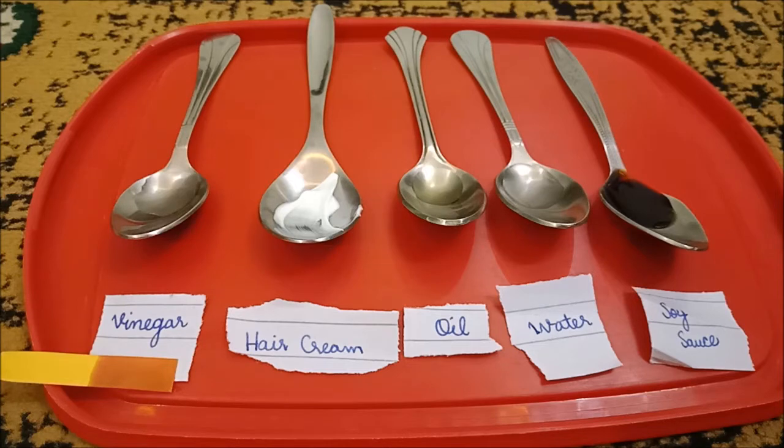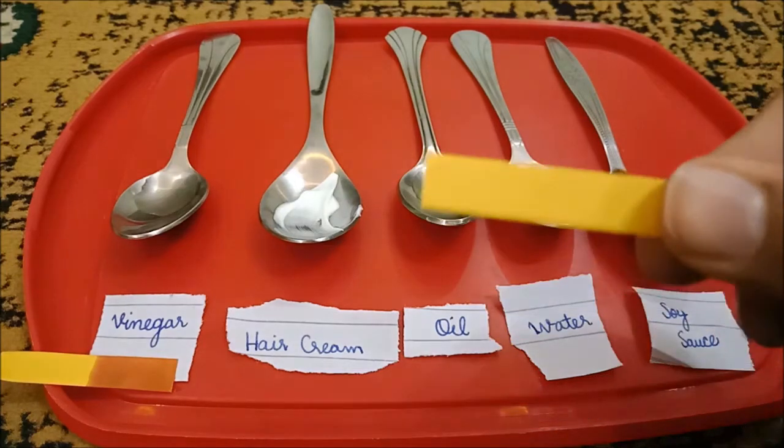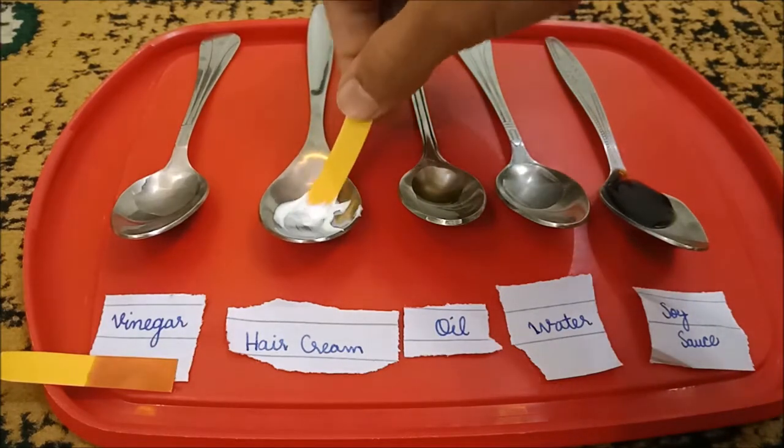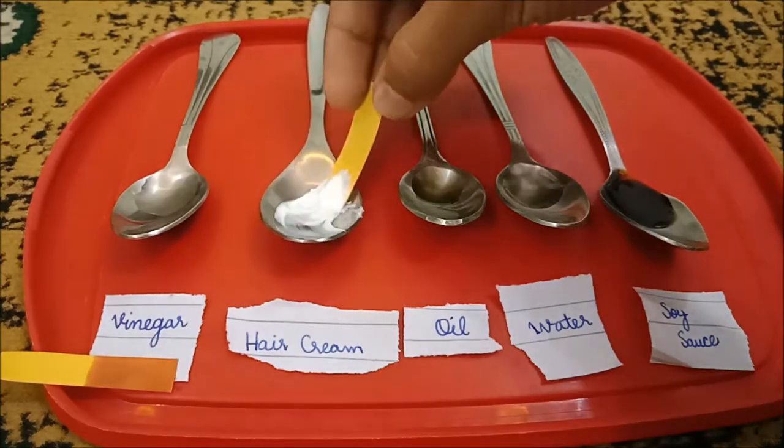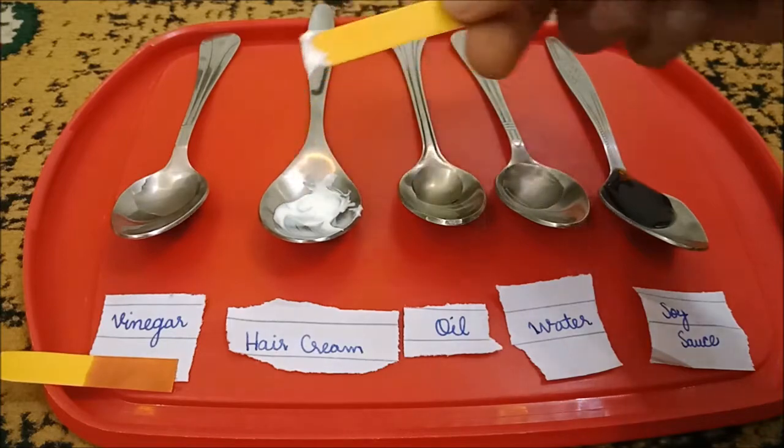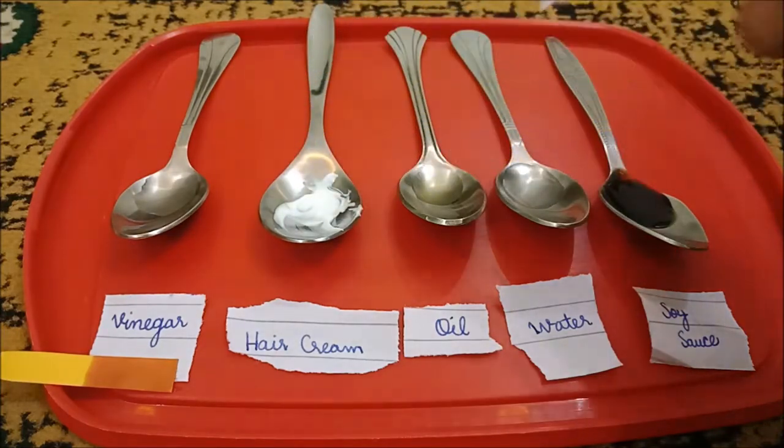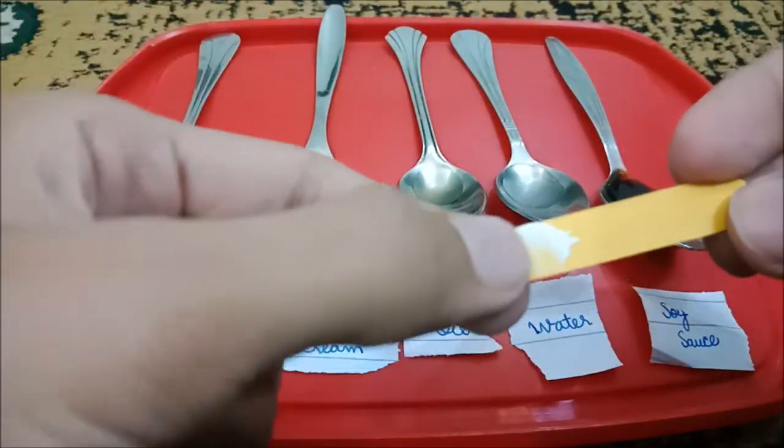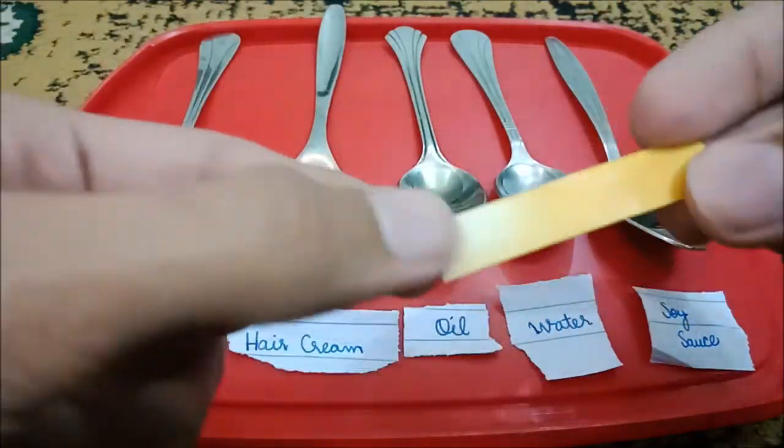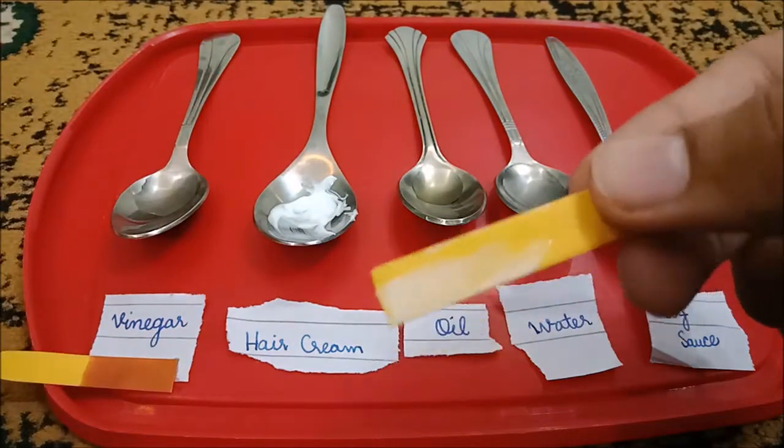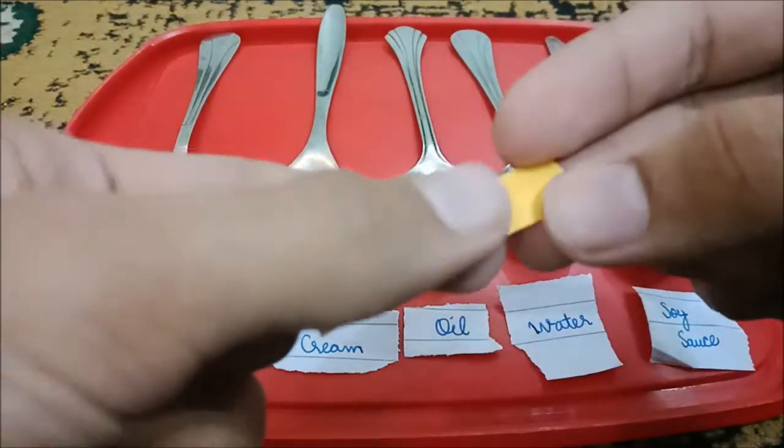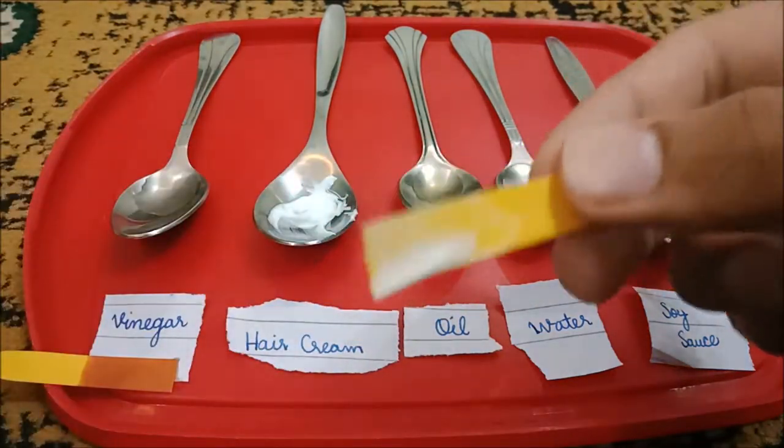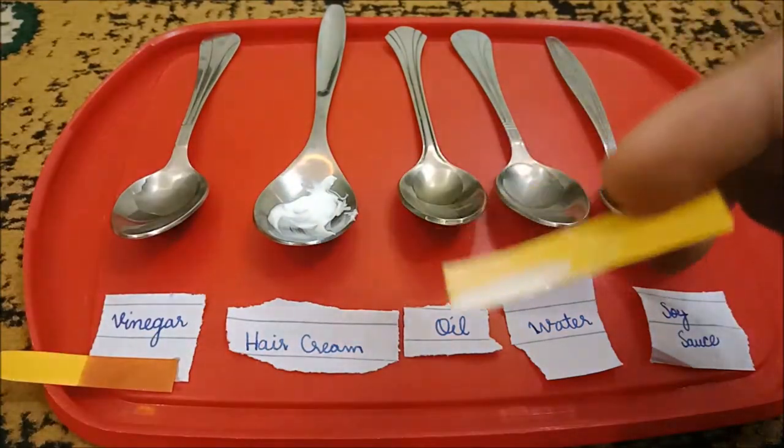After that, we'll take another pH paper. The original color of pH paper is like this orange. Now we're going to put this in the hair cream. Now it's gone all into the hair cream, so I gotta clean it up with my hands. The color hasn't changed, I don't know why. Maybe because the solution is not very hygroscopic. The color hasn't changed, so we'll put that here.